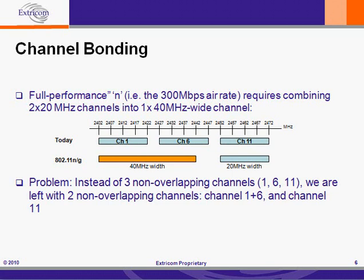The problem is that at 2.4 GHz, if we implement channel bonding, instead of three non-overlapping channels — 1, 6, and 11 — we are left with two non-overlapping channels: channels 1 plus 6, which is our 40 MHz channel, and channel 11, which is our remaining 20 MHz channel. Now let's take a look at what that would imply for a microcell deployment.